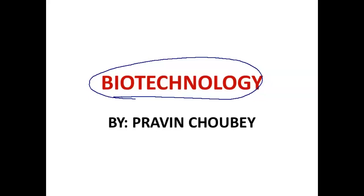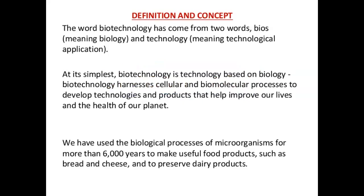Let us start with the definition. Biotechnology comes from the word 'bio', meaning life or biology, and 'technology', meaning technological application. When we combine bio and technology, it is called biotechnology — it means that with the help of technological knowledge we manipulate life, editing genes to create new features for the welfare of people and society. In simplest terms, it is a technology based on biology, using cellular and biomolecular processes to develop products that help improve our lives and the health of our planet.